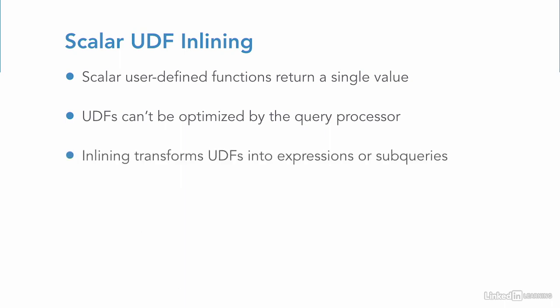The actual cost of computing a scalar user-defined function can be quite high, and there's no way for the optimizer to know ahead of time what that cost will likely be. With the new inlining feature, user-defined functions are automatically transformed into scalar expressions or subqueries which can be optimized during execution. This is because the optimizer is now aware of the full set of steps that must be executed and in turn is able to generate a much better execution plan.